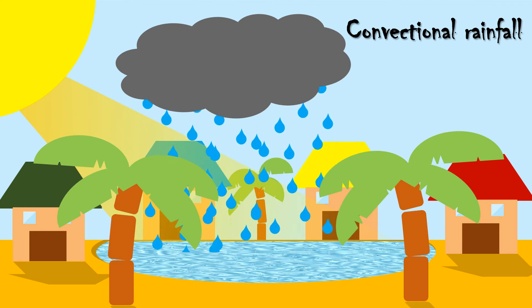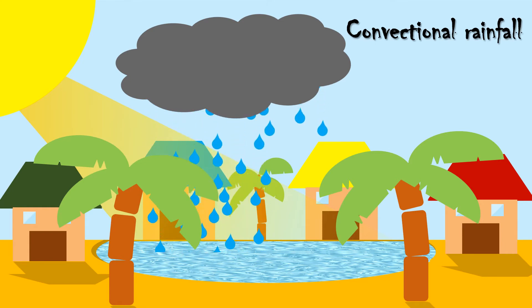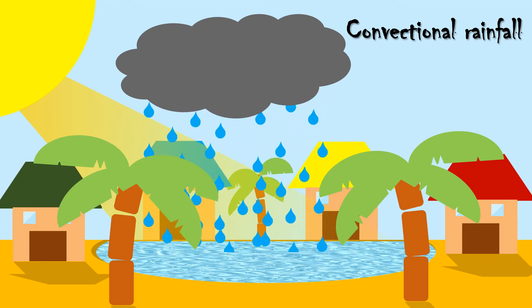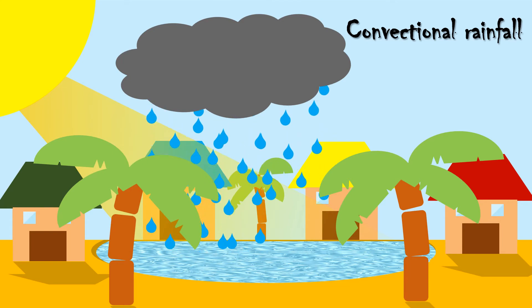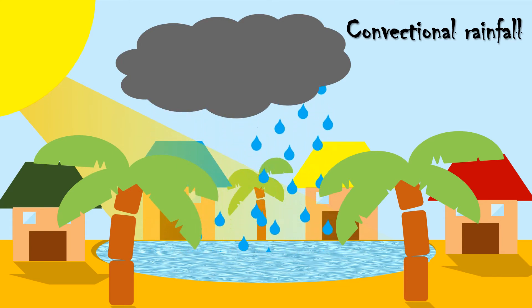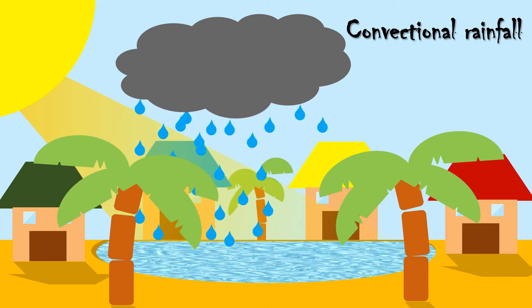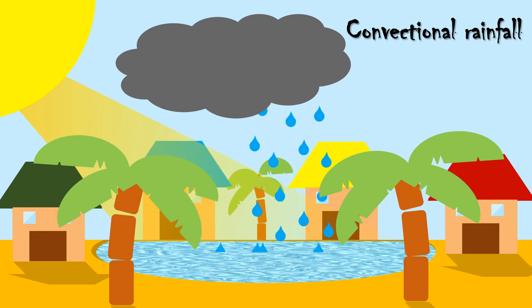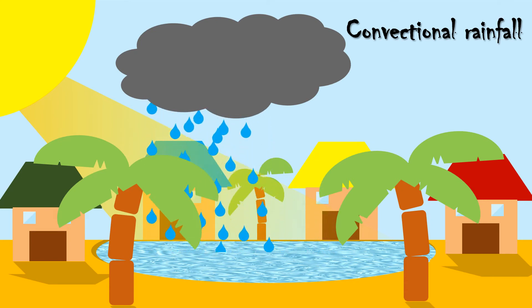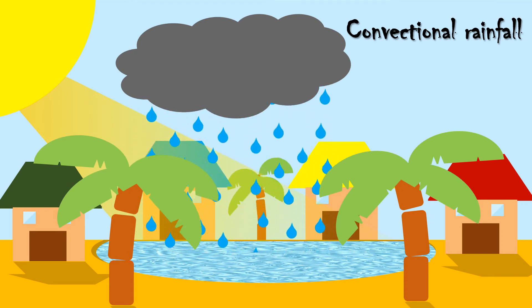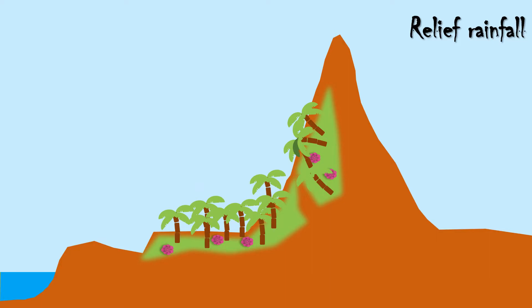Convectional precipitation is heavy but highly localized and it is associated with the minimum amount of cloudiness. Rainfall in the doldrums, that is in the equatorial region, is of convectional nature. In the equatorial region, until about 12 o'clock you find the heat is more, the sun heat is more, then you find evaporation, condensation and precipitation. So after noon you find there is convectional rainfall almost all the days.